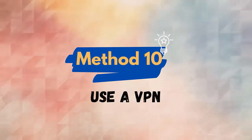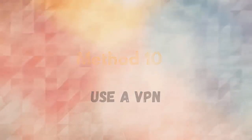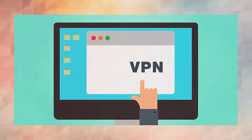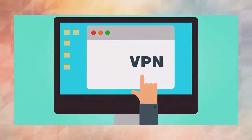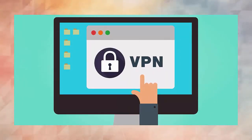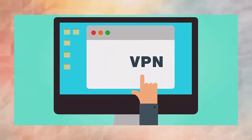Method 10: Use a VPN. If you are using the app on your PC then you can use a VPN. Although it is banned in many aspects in several countries due to copyright issues, you can still opt for it. This works to spoof your ISP and fake your location.